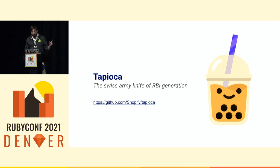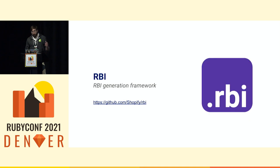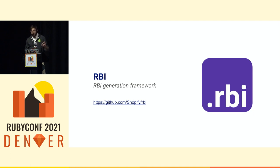This tool is also open source and you can use it on our GitHub. To make Tapioca happen, we needed a framework to generate RBI files and read them so we can modify and then save them again on disk. So we also open sourced RBI, which is an RBI generation framework that helps us create, format, change, and save RBI files onto disk.